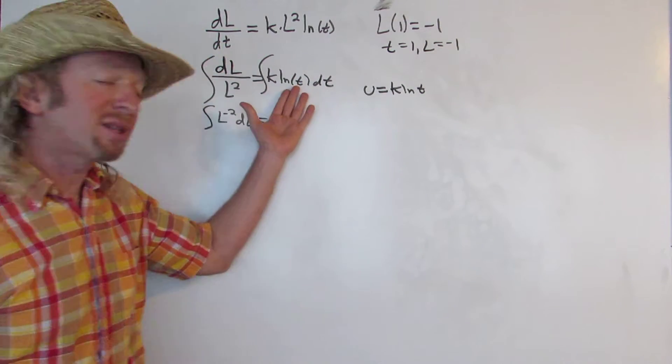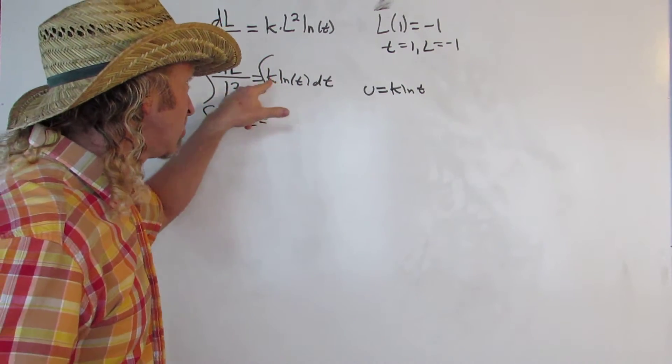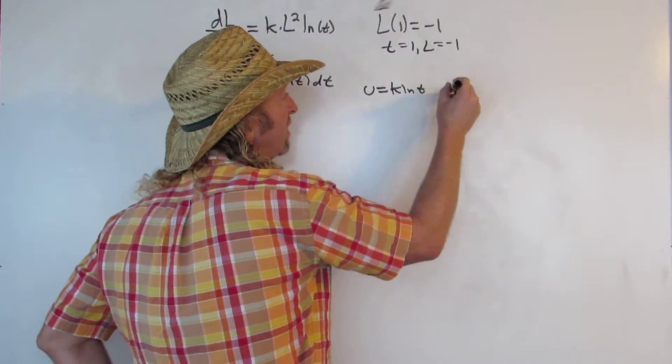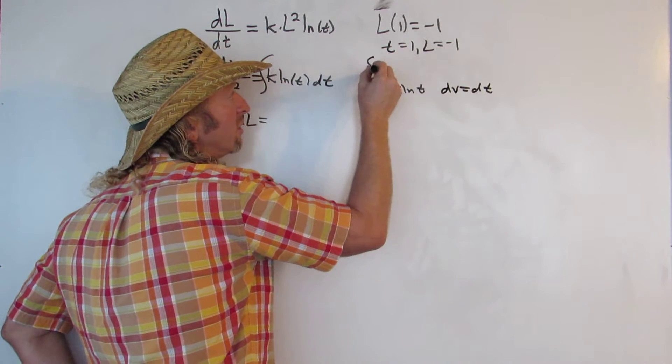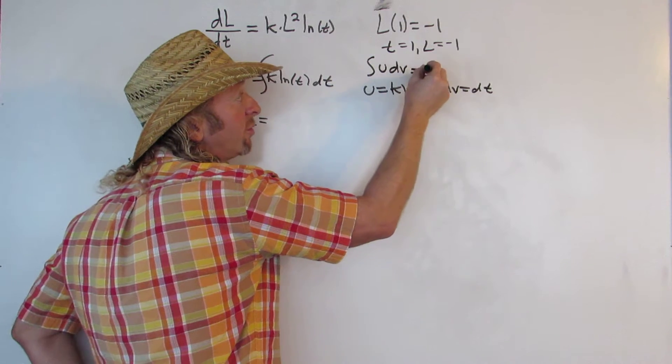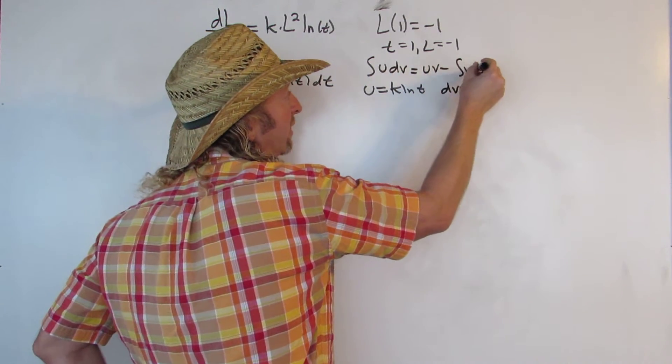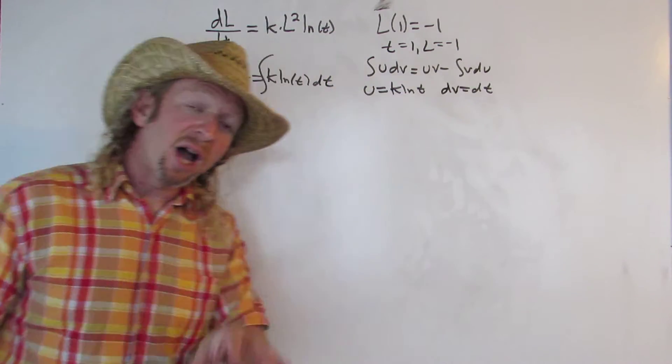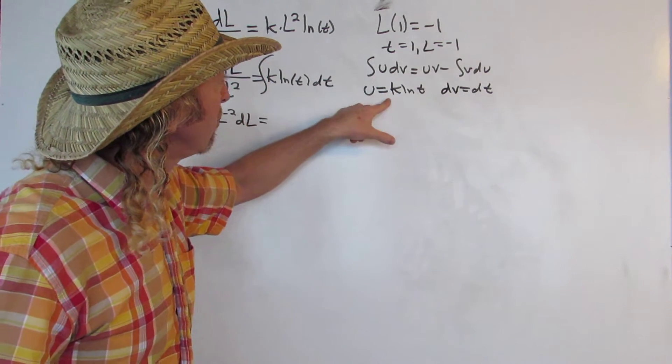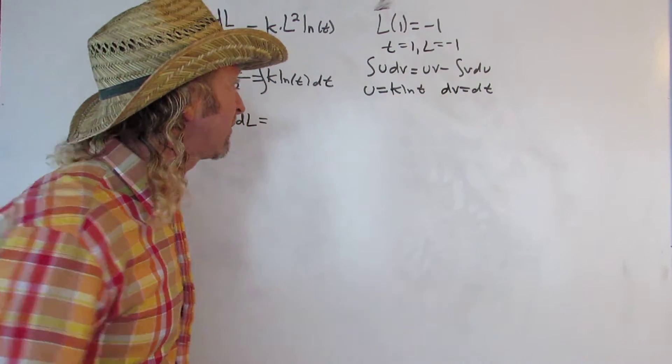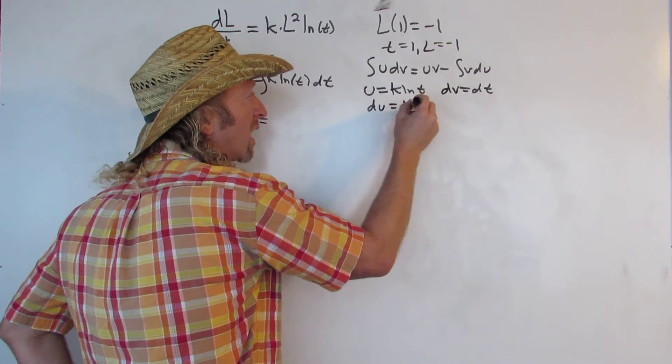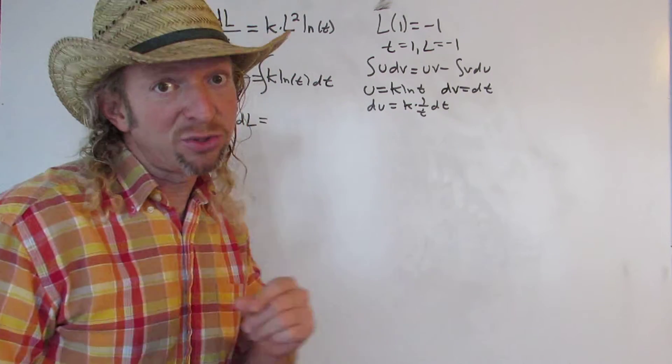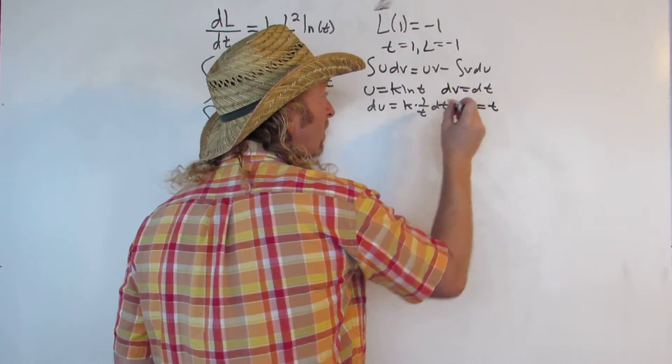So if you're integrating ln, you just let u be your ln. In this case, there's a k here. And then you have to pick your dv, so dv will be dt. And the formula we're going to use says that if you have udv, it's equal to uv minus the integral of vdu. That's the integration by parts formula. So whenever you have a natural log, just use parts to integrate it. Unless of course you have the integral memorized. So we'll let u be k ln t, dv is what's left over. So du will be k times 1 over t dt, that's because the derivative of ln is 1 over t. And when you integrate dv, you just get t. So v is equal to t.